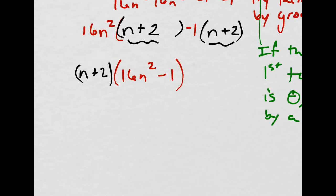So this follows my difference of squares pattern. n plus 2, and what would that be? It would be 4n and 1, 4n and 1, and then 1 plus 1 minus.